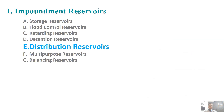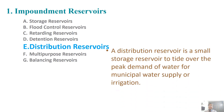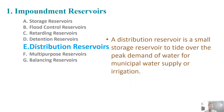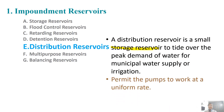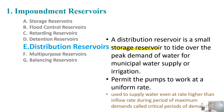Distribution reservoirs are not basically dams — these are more of a tank. Distribution reservoirs are small storage reservoirs used to tide over the peak demand of water for municipal water supply or irrigation. As tanks in cities and towns, water is stored. These permit the pumps to work at a uniform rate, and they are used to supply water even at a rate higher than the inflow rate.